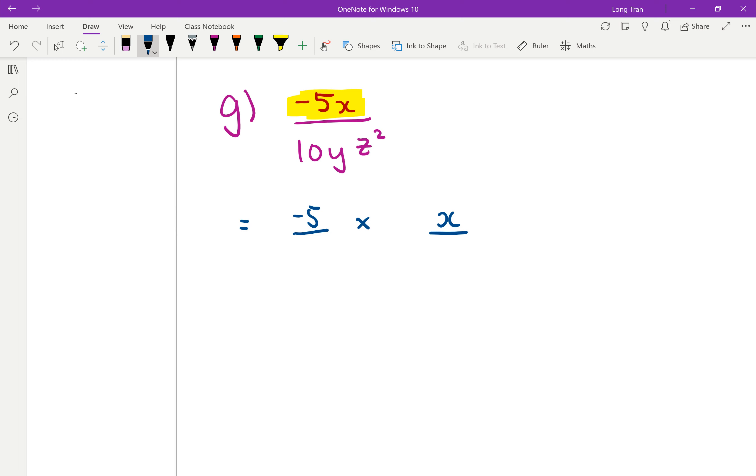I like to keep numbers with numbers. So this is negative 5, I'm going to pair it with 10. So it'll be negative 5 over 10. And then x, well notice x is by itself. And then notice that the others, the yz squared, are in the denominator.